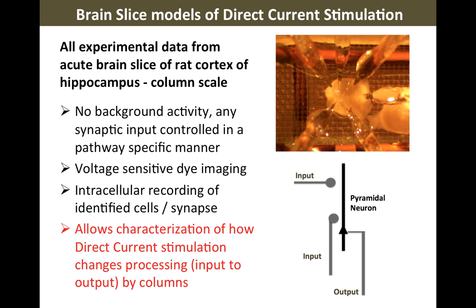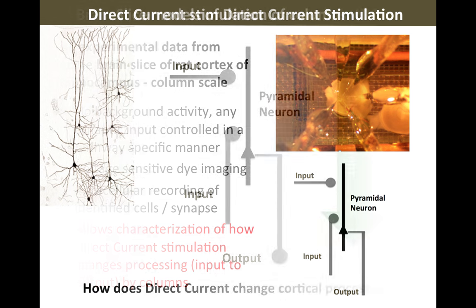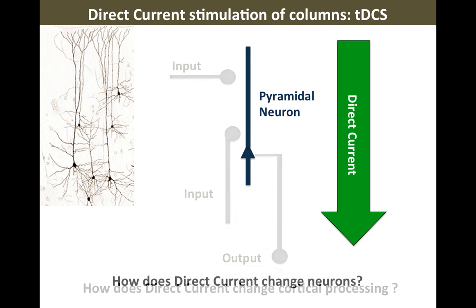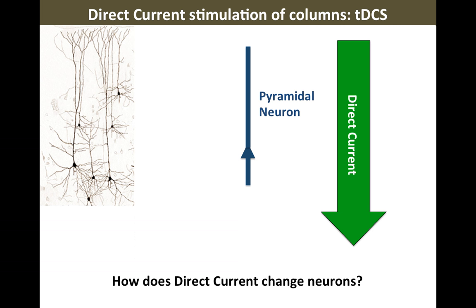I'm going to be showing data from animal models. These are very well-established systems to investigate neurophysiology and plasticity. There are many advantages to using a brain slice, either from cortex or hippocampus — many types of experiments that would be impossible in a person or even in an intact animal. This is a system we've been using for almost 20 years to look at the effects of direct current stimulation. We specifically asked the question: what does direct current stimulation do to the pyramidal neuron? This seems like a very important neuron — it's receiving input, processing that input, and making a decision about what to do with it.